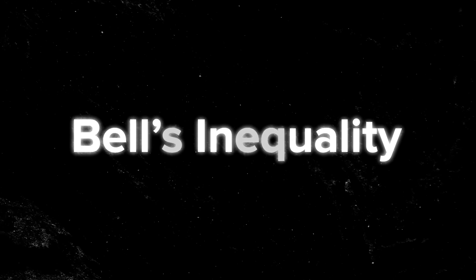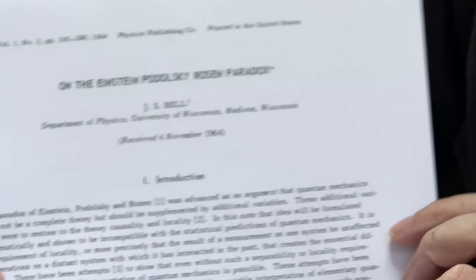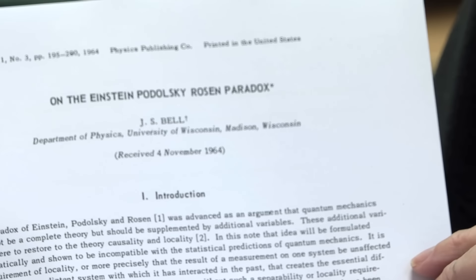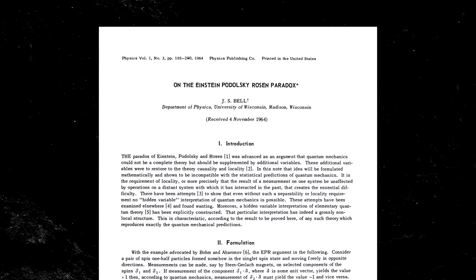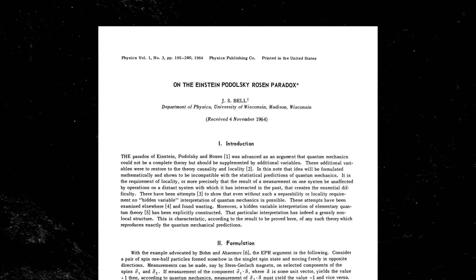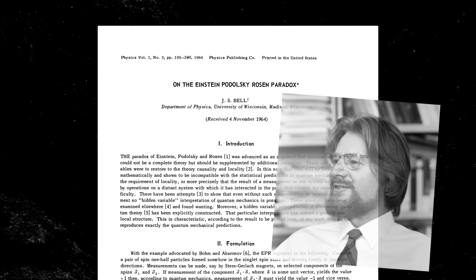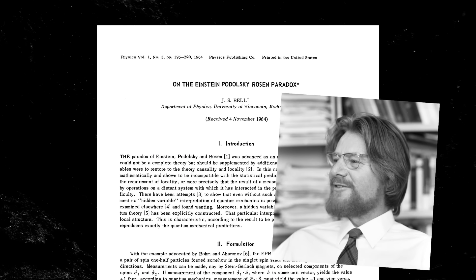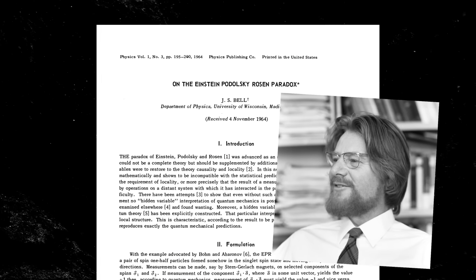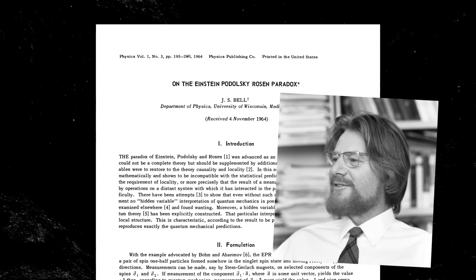The original paper was written in 1964 by John Bell, called 'On the Einstein-Podolsky-Rosen Paradox.' The important issue here is that John Bell essentially took on Einstein and got the better of him.